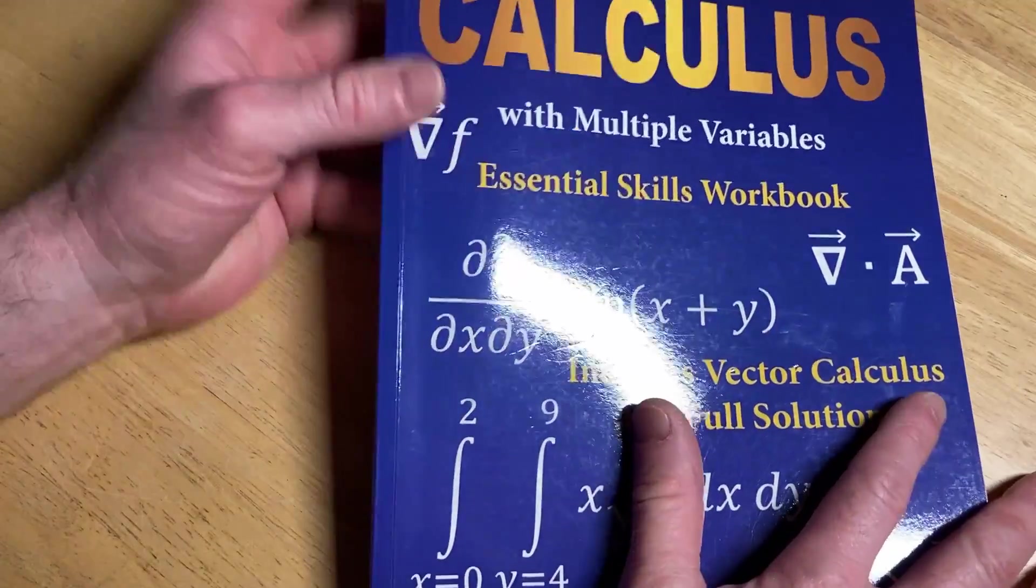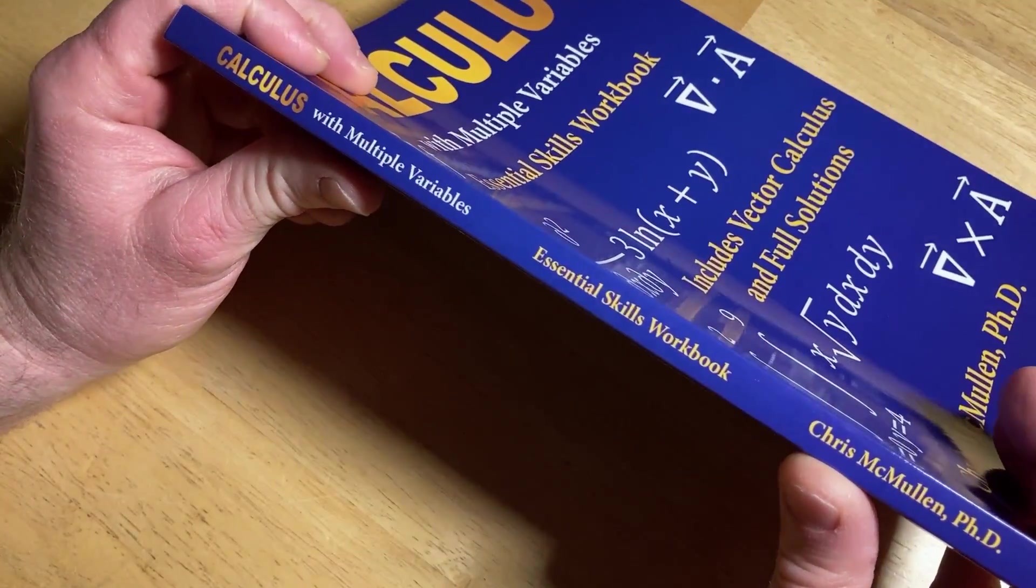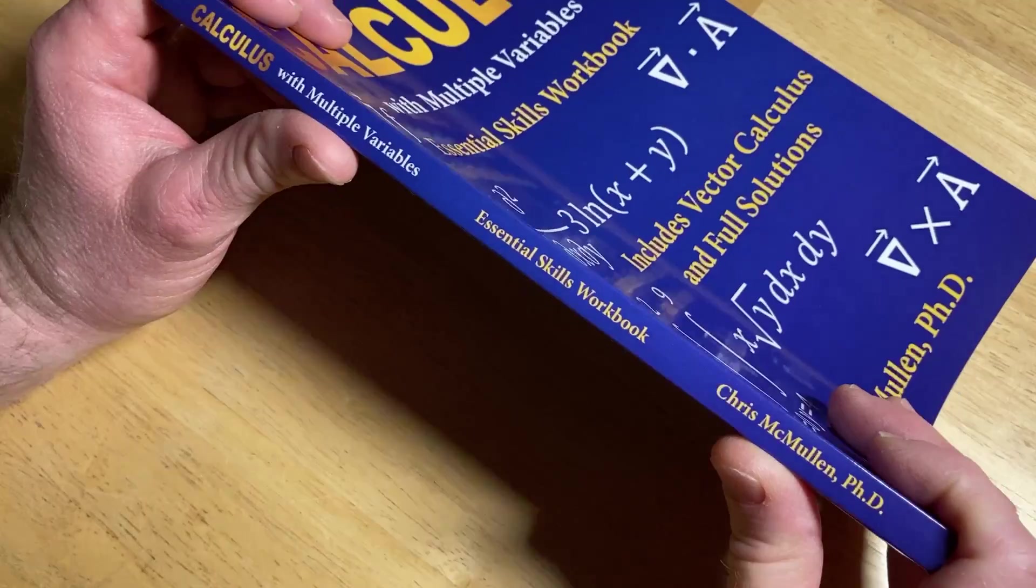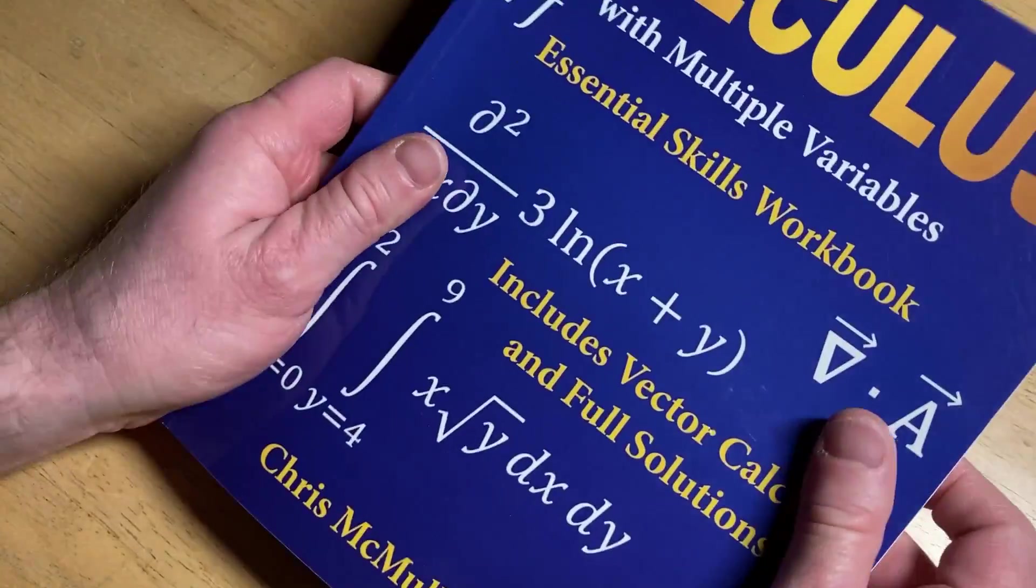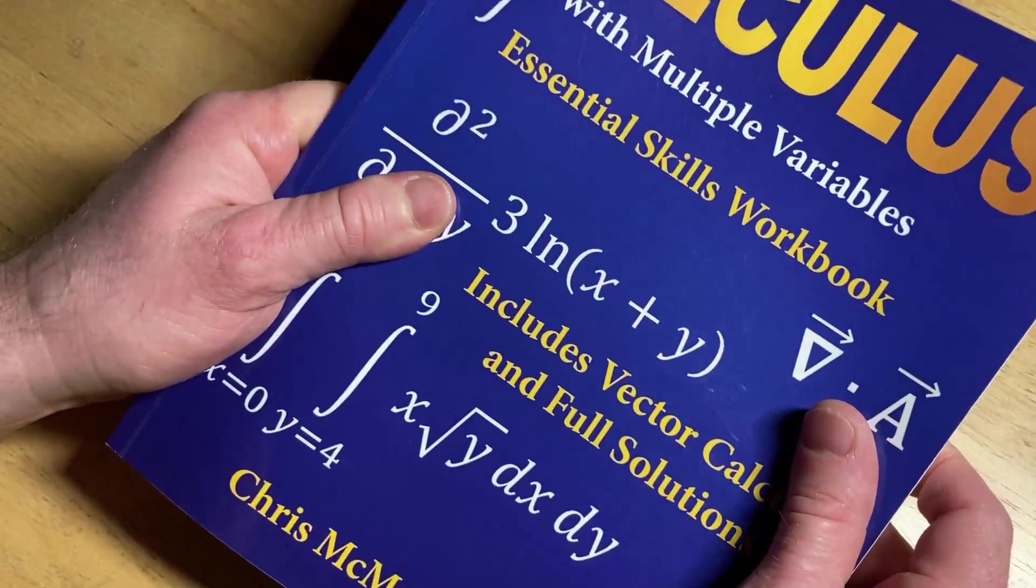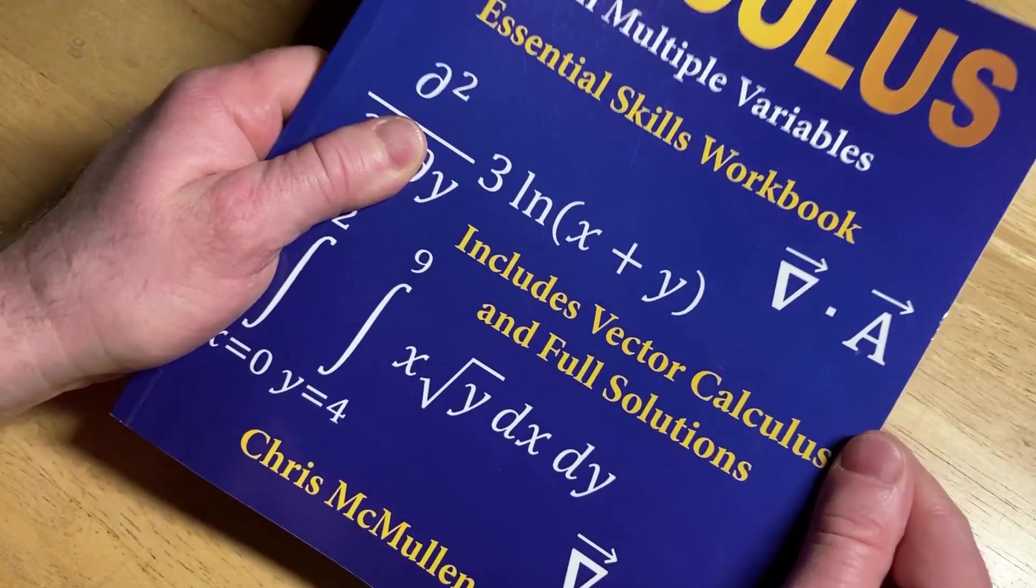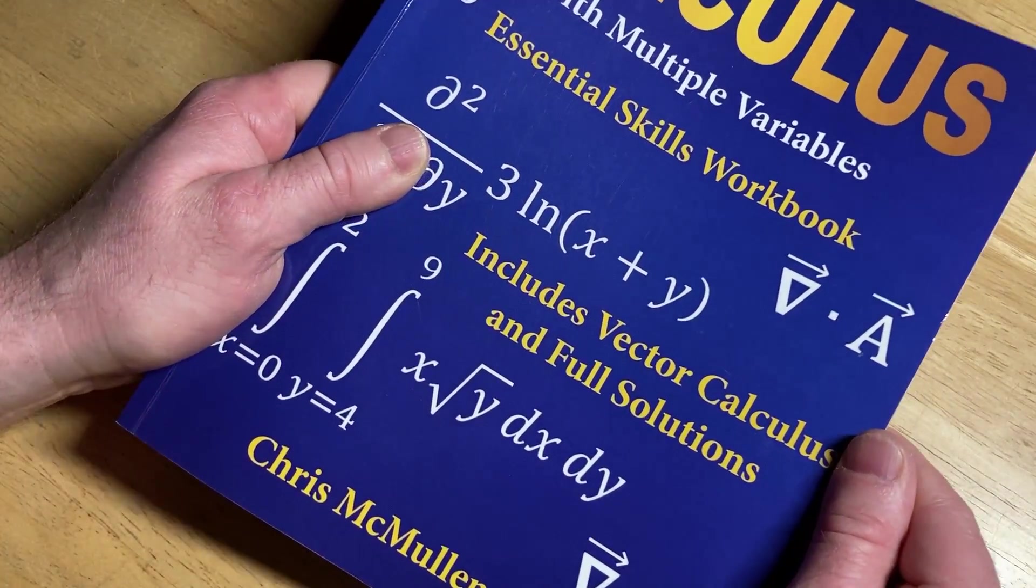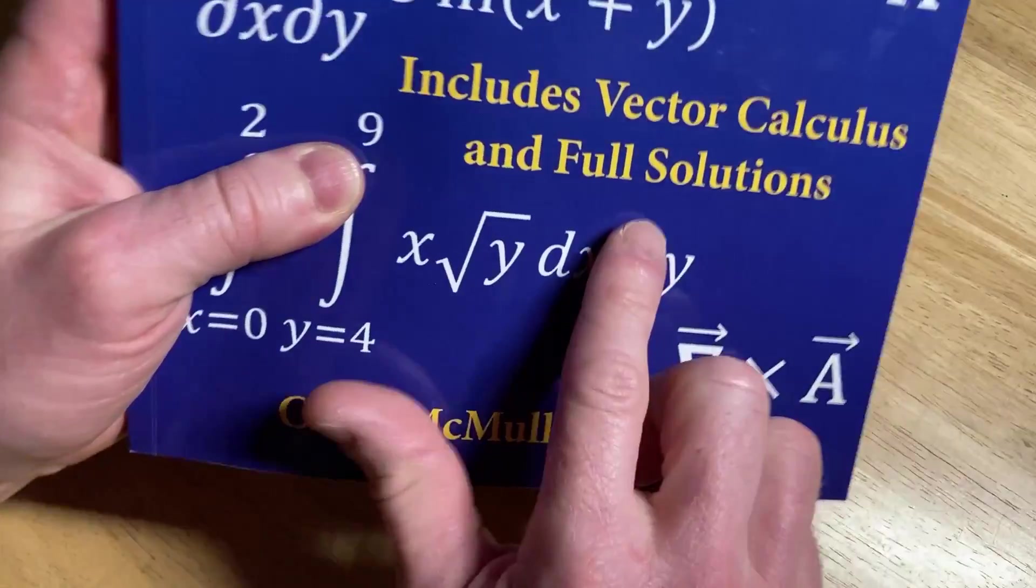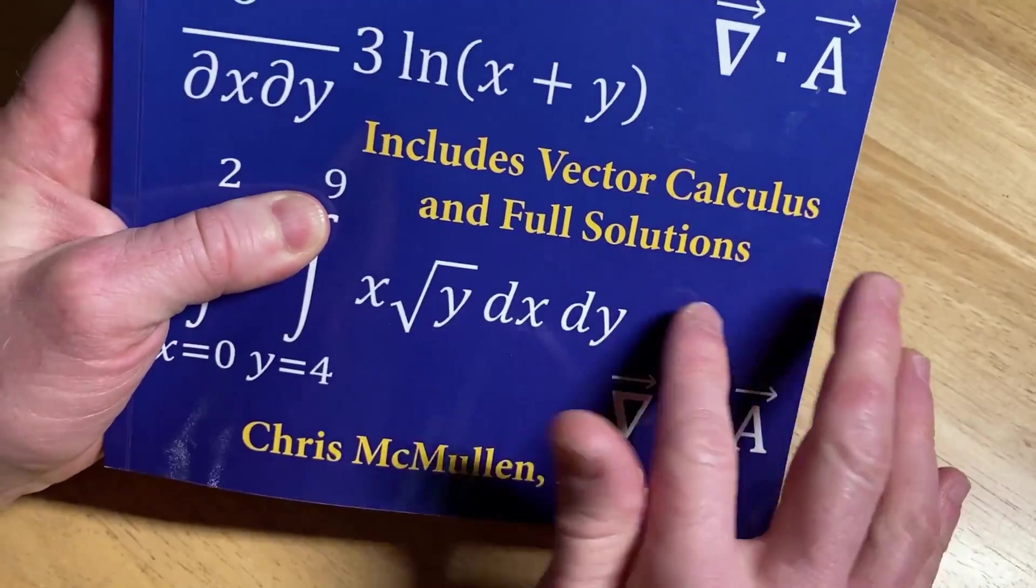That basically means it's going to have a lot less information than you would get in a regular calculus textbook. You might say, why in the world would you want to buy a book that has less information than other books? Well, because this book actually has really good examples. They are worked out and it has full solutions to all the exercises.